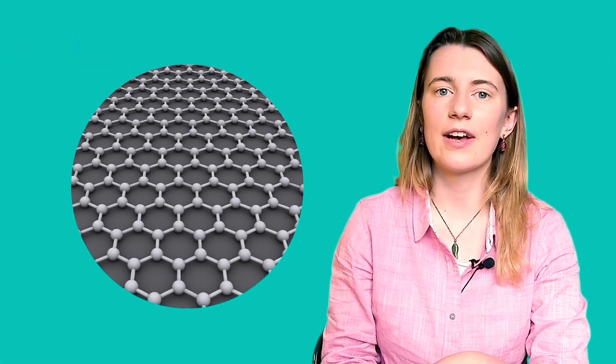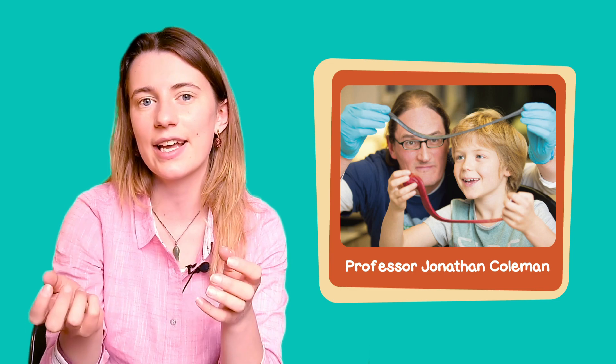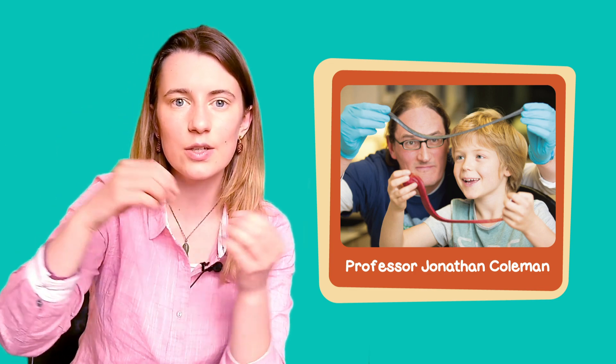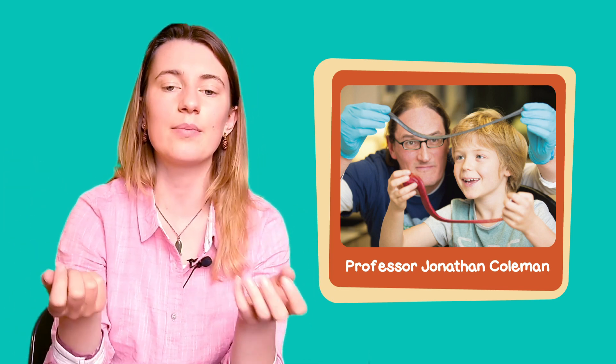At Amber we have found new ways to make graphene from graphite without using cellotape and have found lots of new uses for it. Professor Jonathan Coleman had the idea of putting graphene into silly putty to make a super stretchy sensor that we can measure heart rate and blood pressure with.